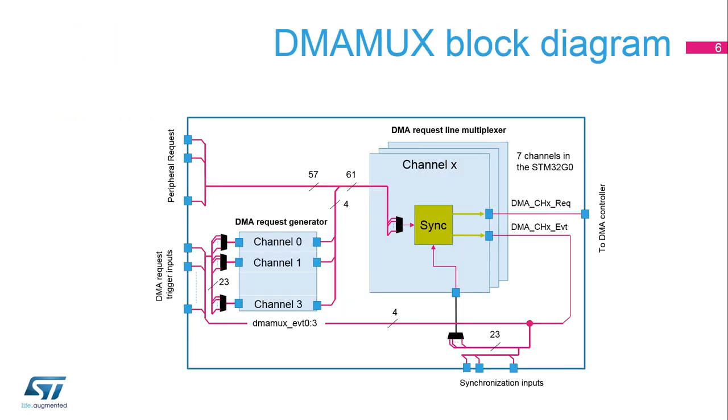The DMA-MUX has two main sub-blocks: the request line multiplexer and the request line generator.